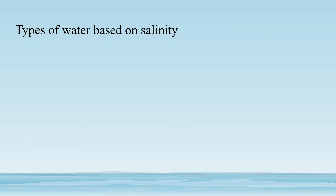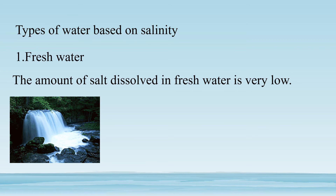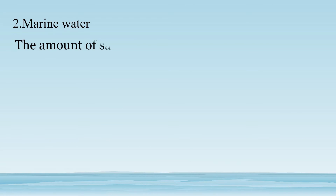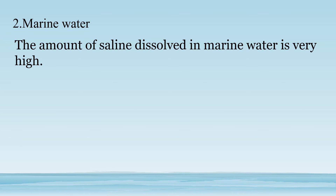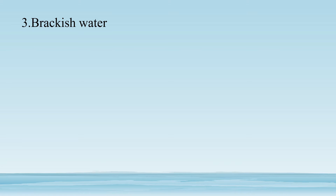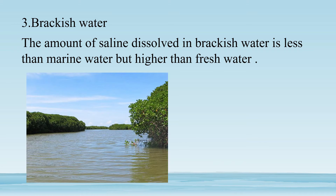There are three types of water based on salinity, meaning based on the salt level. The first type is freshwater — the amount of salt dissolved in freshwater is very low; examples are rivers, waterfalls, and wells. The second type is marine water — the amount of salt dissolved is very high; examples are seas and oceans. The third type is brackish water — the amount of salt is less than marine water but higher than freshwater; an example is the lagoon.